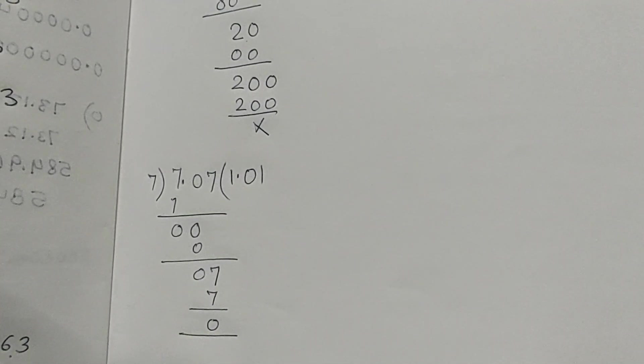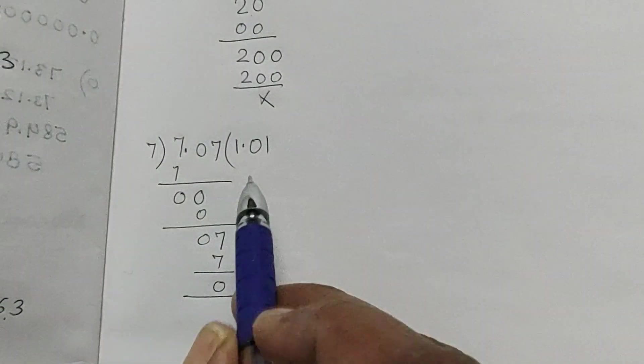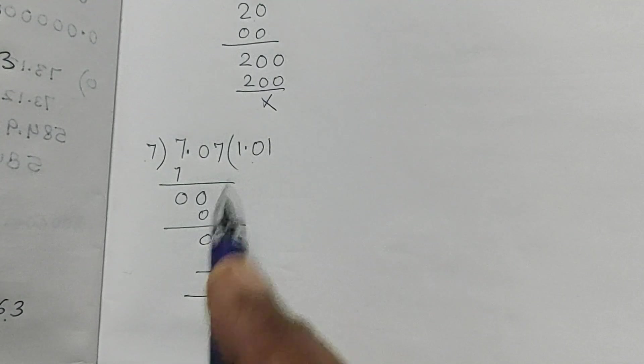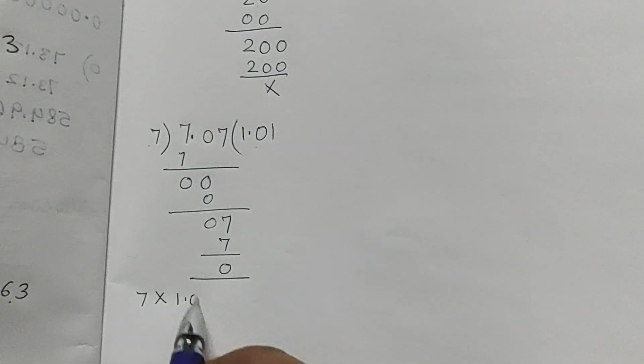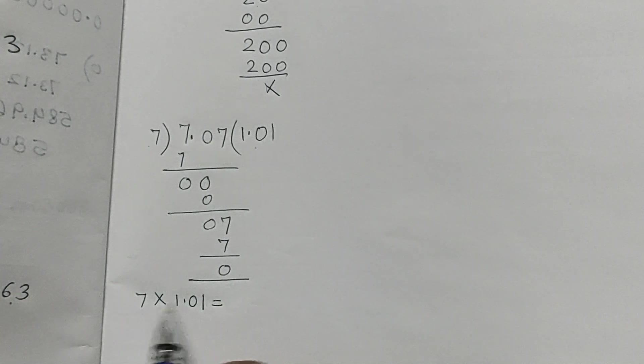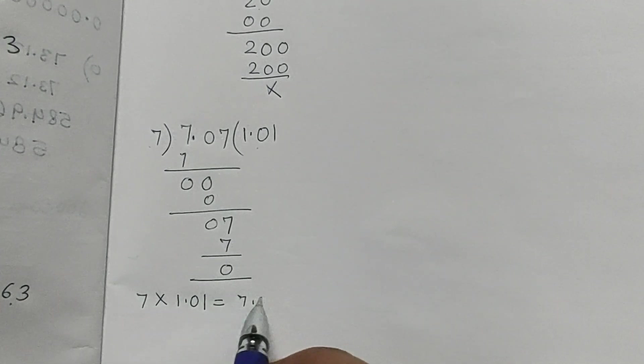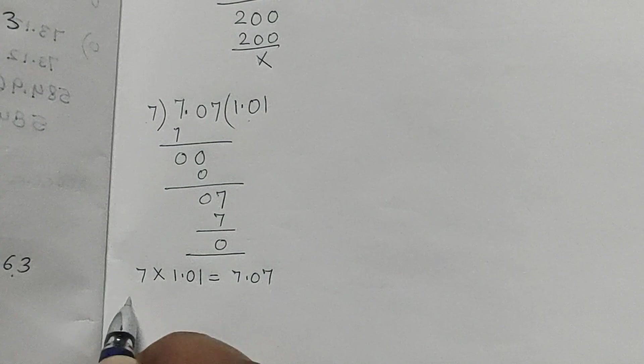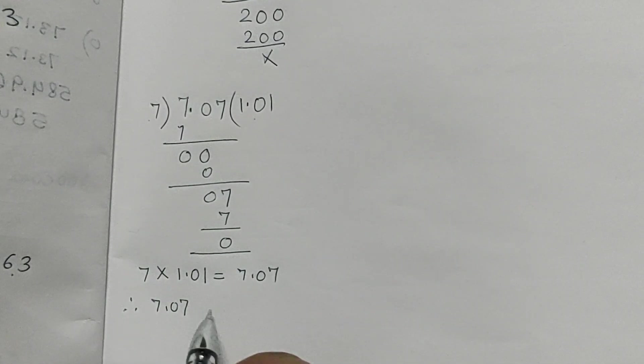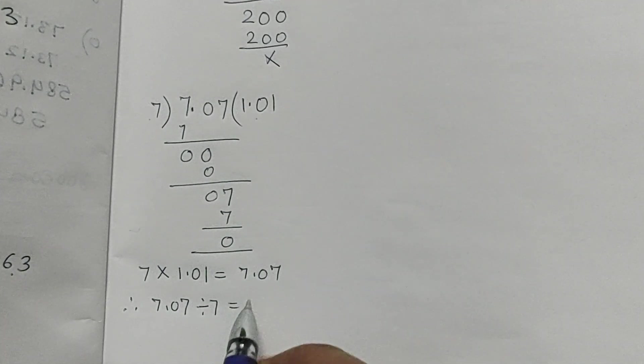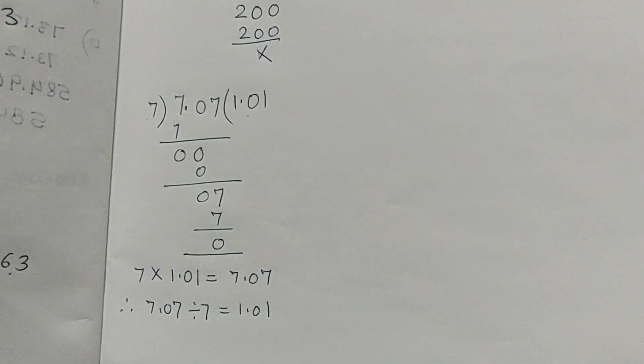Now we have to check. So we will multiply 7 by 1.01. 7 multiplied by 1.01 is equal to 7.07. Therefore, 7.07 divided by 7 is equal to 1.01.